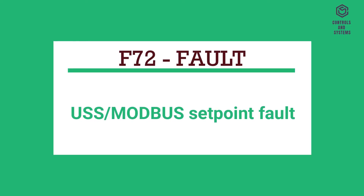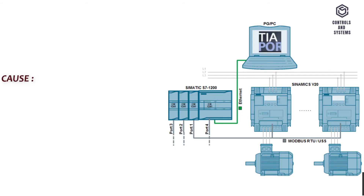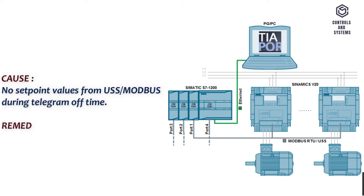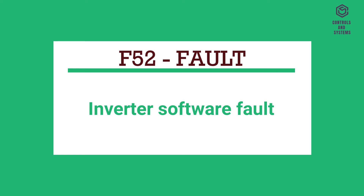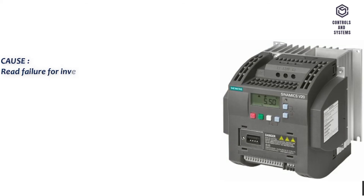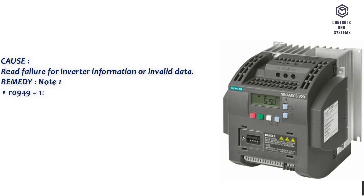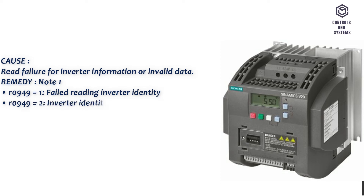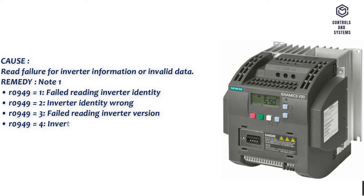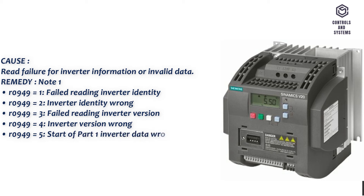F72 Fault: Inverter software fault. Cause: Read failure for inverter information or invalid data. Note 1: R0949 equals 1: failed reading inverter identity. R0949 equals 2: inverter identity wrong. R0949 equals 3: failed reading inverter version. R0949 equals 4: inverter version wrong. R0949 equals 5: start of part 1 inverter data wrong.